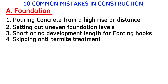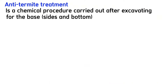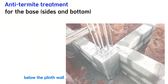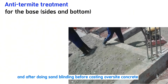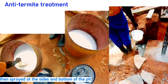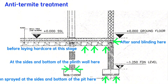Common mistake number four is skipping antitermite treatment. Antitermite treatment is a chemical procedure carried out after excavating for the base. We treat the sides and bottom of the bases with an antitermite chemical below the plinth wall, and after sand blinding before casting oversight concrete. The chemical is usually mixed with water, then sprayed at the bottom and sides of the pit after compaction, before laying hardcore, and also at the sides and bottom of the plinth wall or any other place that has contact with natural soil.